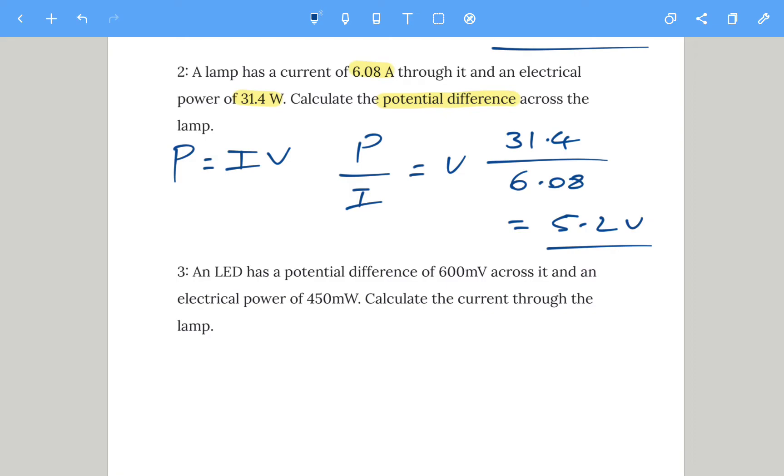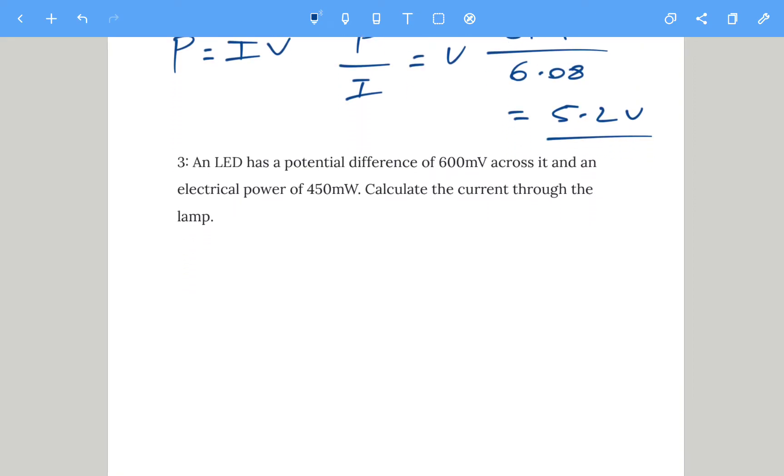If you want to pause and have a go at the third one, then I'll take through the answer. Be careful with the units. In this one, an LED has a potential difference of 600 millivolts. Little m is milli, which means divide by 1,000, and an electrical power of 450 milliwatts. Calculate the current.